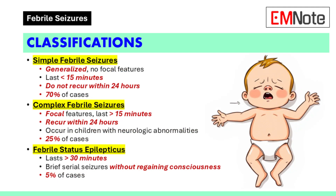Febrile seizures are classified as simple, complex, and febrile status epilepticus based on duration, the presence of focal features, and recurrence. Approximately 70% of febrile seizures are simple, 25% are complex, and 5% are classified as febrile status epilepticus. Febrile status epilepticus is defined as seizures lasting more than 30 minutes, or brief serial seizures without consciousness being regained during the interictal periods with a total duration of more than 30 minutes.